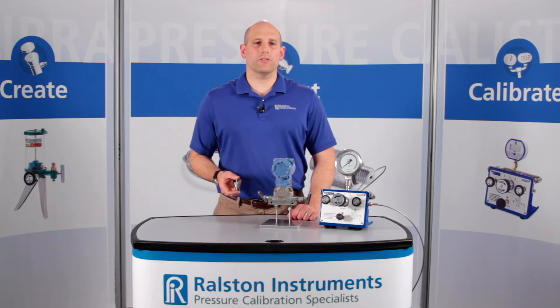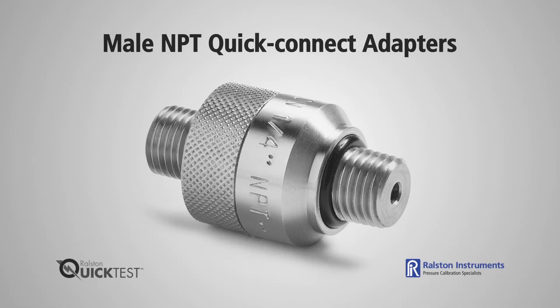These stainless steel adapters are a great solution for situations where you cannot leave an adapter in the field. Male NPT quick connect adapters are available in a range of NPT sizes with up to 5,000 psi or 345 bar working pressure.